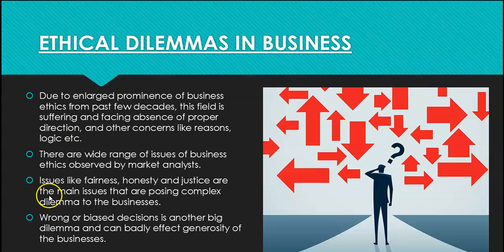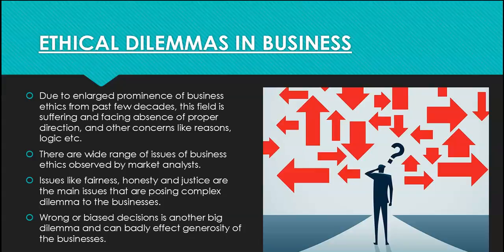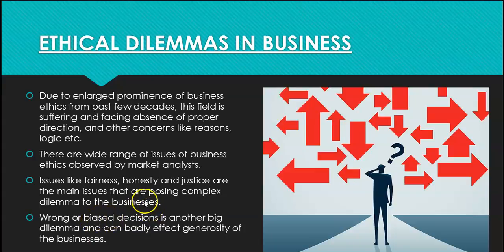Wrong and biased decisions are another big dilemma that can badly affect the integrity of the business. Favoritism is one example — refusing to increase salaries but increasing work hours, prioritizing the business over employees' welfare, or favoring one person over others. There are many such dilemmas that arise in a business.